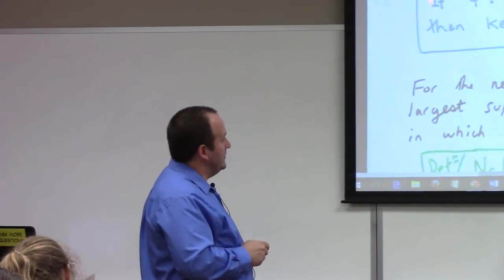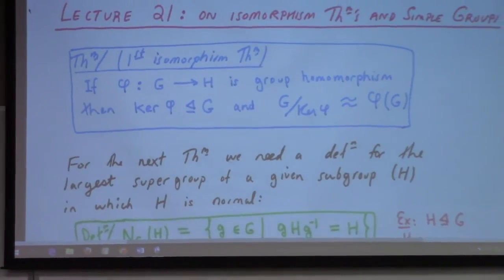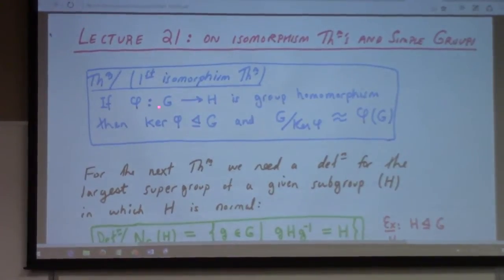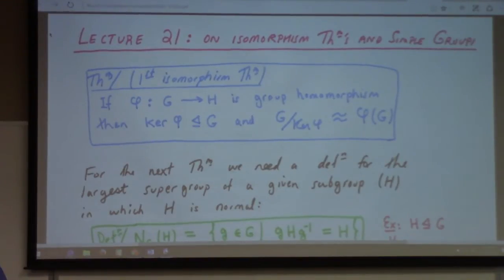First isomorphism theorem. This we know, right? This we're learning. So if you have a group homomorphism, right, a function which preserves the operation of the group, then we have proved that the kernel of the homomorphism is, in fact, a normal subgroup of the domain. And also the quotient of the domain by the kernel is isomorphic to the image. Okay? This is a very, very useful theorem. All right?